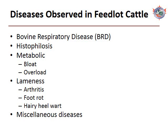Metabolic diseases are also observed in the feedlot, with the two predominant being ruminal bloat and carbohydrate overload. Additionally, lamenesses of various causes are observed, with primary causes being arthritis, foot rot, and to a lesser extent hairy heel wart. Several miscellaneous diseases occur sporadically, such as congestive heart failure, prolapses, and hardware disease. Of all diseases mentioned, BRD is the most common cause of morbidity in feedlot calves, making it the most economically significant disease.